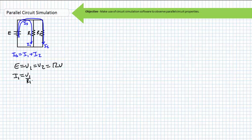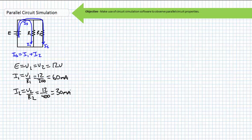Now we can use Ohm's law to solve for the current through each element. I1 equals V1 divided by R1; substituting in the necessary values, we find I1 equals 60 milliampere. I2 equals V2 divided by R2; substituting in the necessary values, we find I2 equals 30 milliampere. More current is going through the smallest resistor; less current is going through the largest resistor. I'm reasonably confident our answers are correct.